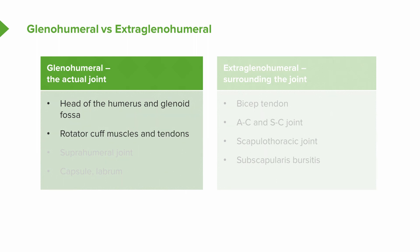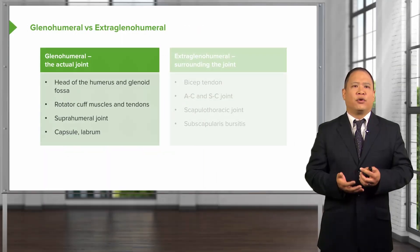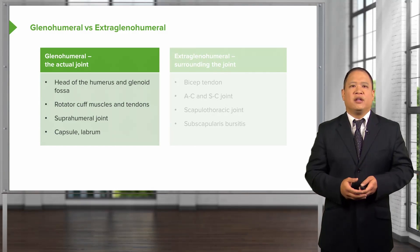Any sort of injury, inflammation, or tear of the rotator cuff muscles and their tendons could cause shoulder pain. The superhumeral joint is the space above the humerus, and impingement or compression of structures there, or any inflammation, could cause pain. The capsule surrounding the glenohumeral joint consists of thickened ligaments that can sometimes be torn, inflamed, or injured. These four things are possible glenohumeral joint issues that could cause pain.